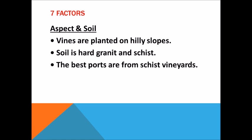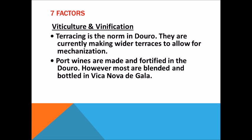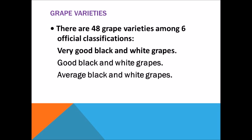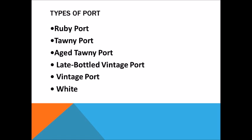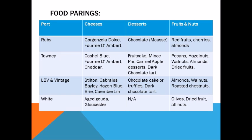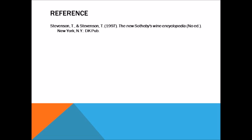Dolcetto: Dolcetto di Dogliani, Dolcetto Superiore, Dolcetto d'Alba, and Dolcetto d'Acqui. Medium to high tannin, low acid, dark fruit, and licorice flavor — made with the Dolcetto grape. Gattinara: made from the Nebbiolo grape. Asti and Moscato d'Asti: semi and fully sparkling wines made by the tank method from the Moscato grape. Gavi: made from the Cortese grape — dry, crisp, high acidity, citrus and mineral notes.